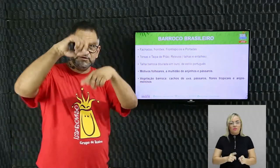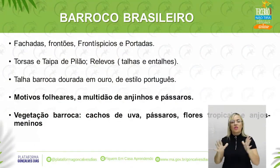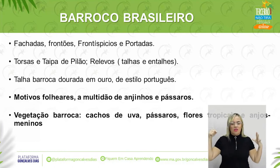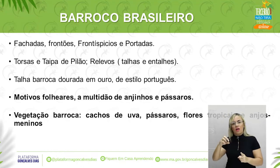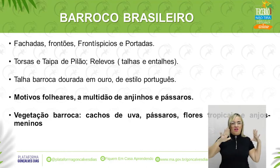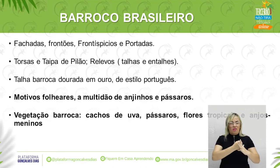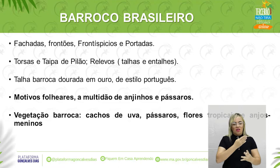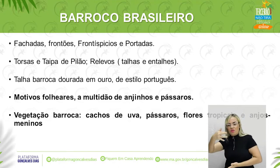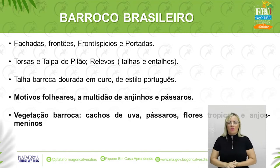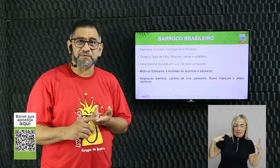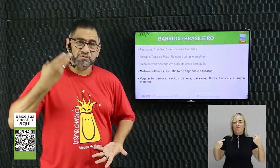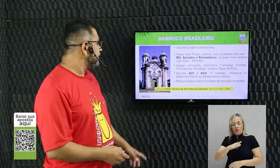Outros elementos do barroco brasileiro: motivos foliares — muitas folhas, curvas — e muitos anjos. Os anjos barrocos são crianças: bebês com asas, com aureolas, com cachinhos. Na igreja do Carmo em Alcântara (Maranhão) há 100 anjinhos no altar. A vegetação barroca inclui cachos de uva, pássaros, flores tropicais. Os anjos medievais eram adultos guerreiros; os anjos barrocos são crianças — talvez a característica mais pertinente do barroco brasileiro. A arquitetura barroca brasileira se desenvolveu em áreas mais ricas (Minas Gerais, Salvador) e mais simples (São Paulo, Rio de Janeiro).